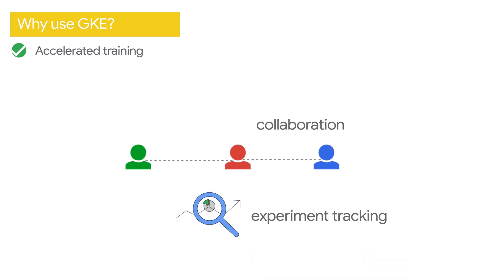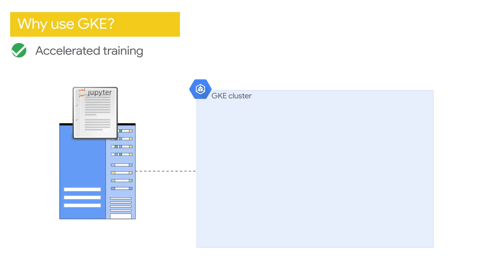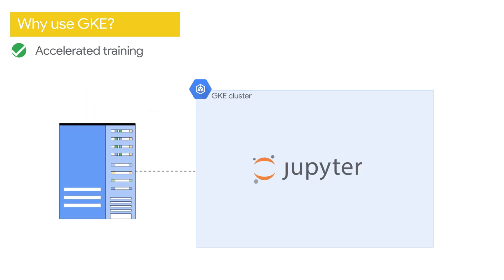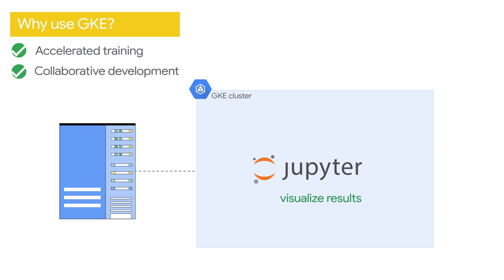QuickScan's team wants to improve collaboration and experiment tracking. GKE enables them to easily migrate their Jupyter notebooks from their local machines to a hosted environment, allowing them to work together, share code, and visualize results seamlessly.